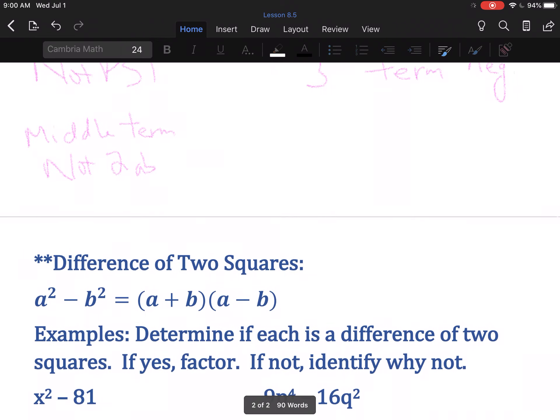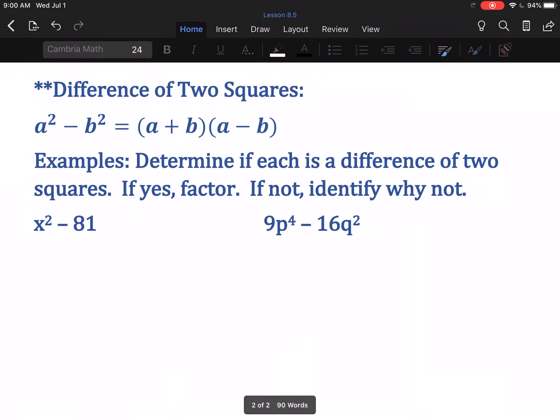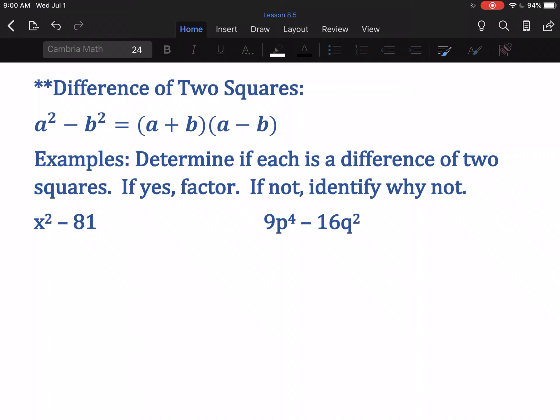The second is the difference of two squares, which the pattern is actually a whole lot easier. If you have a perfect square minus another perfect square, then you can factor it as the square roots, one added, one subtracted for binomials. Determine if it's a difference of two squares, which is simply: can we take the square root of both of them and is it subtraction? If yes, we'll factor. If not, it's going to be because something's not a perfect square or it's addition.